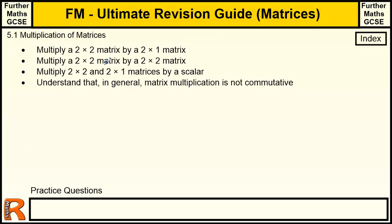We're going to look at the basic skills of how to multiply matrices, and another thing we're going to point out is that matrix multiplication is not commutative. That means that if we're multiplying two matrices — say we're multiplying matrix A by matrix B — that's not always equal to matrix B times matrix A. Sometimes it is, but it's not always.